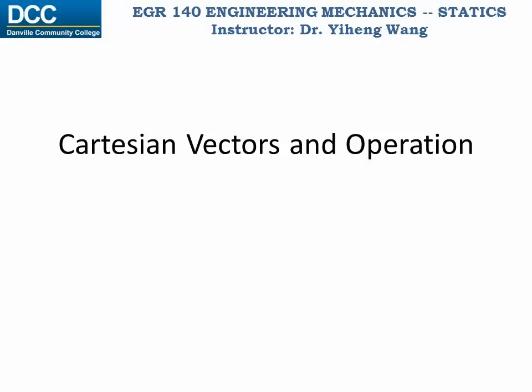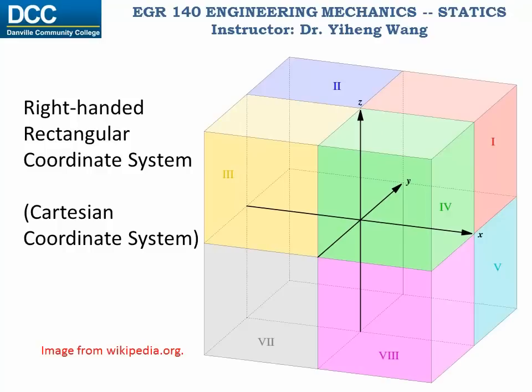Vector operations can be greatly simplified if they are expressed as Cartesian vectors in the Cartesian coordinate system. The three-dimensional rectangular coordinate system, also known as the Cartesian coordinate system,